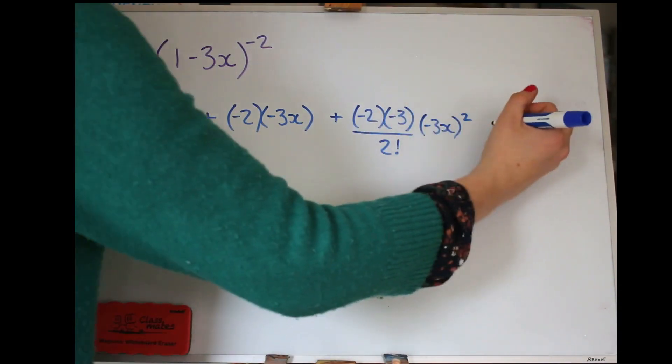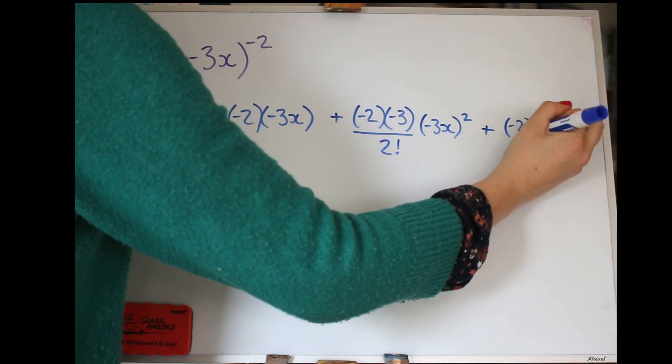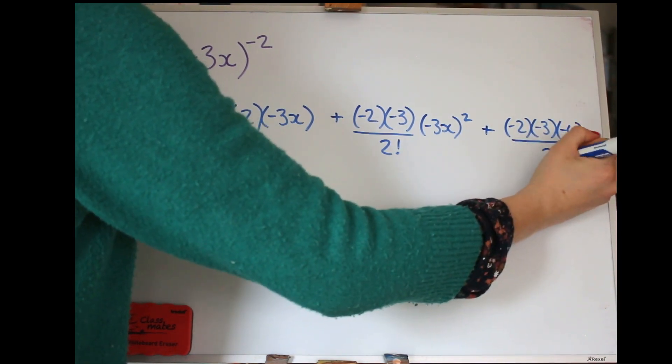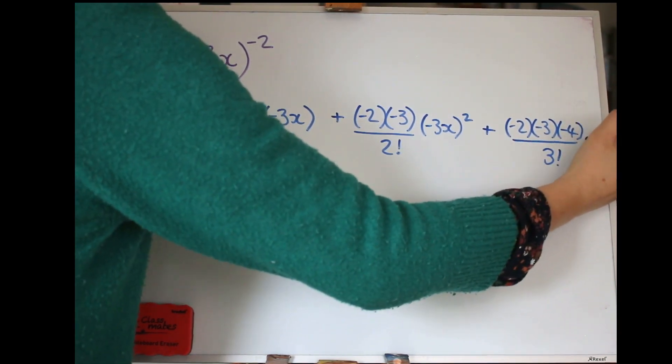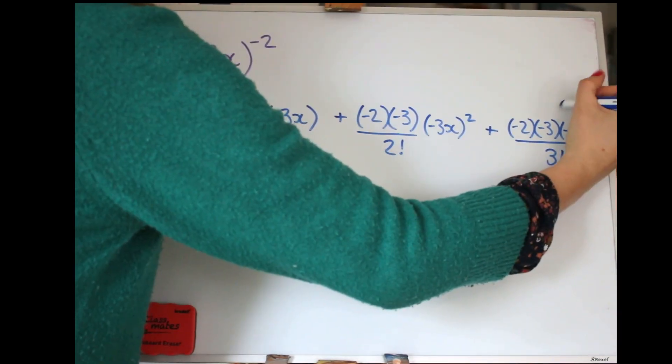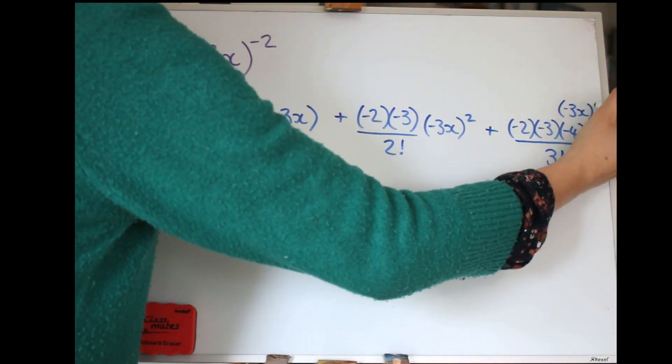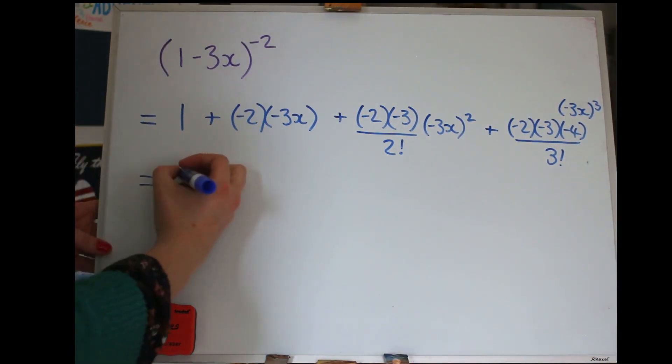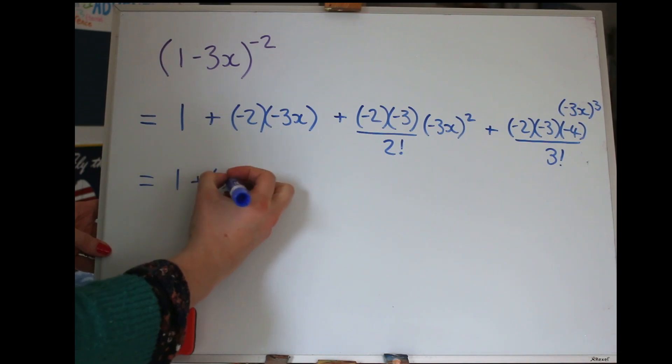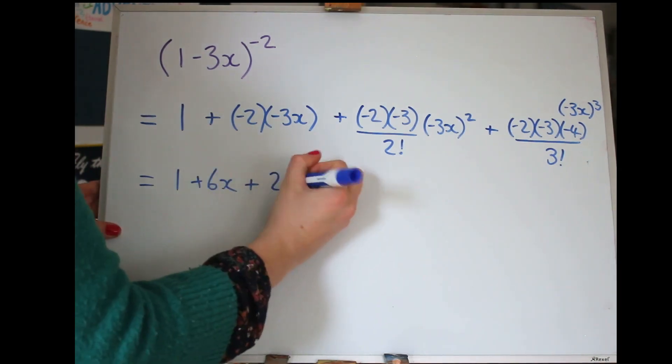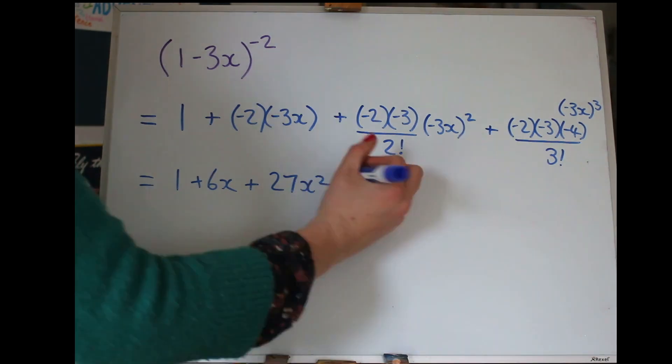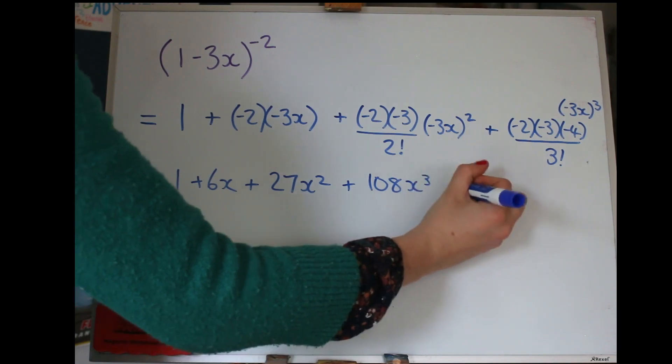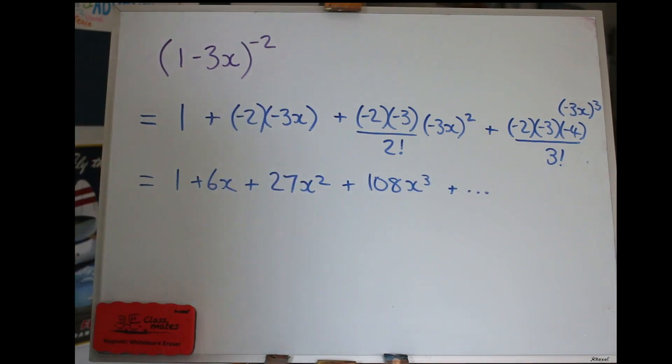And if I can squeeze it on, we'll do one more term here. So we've got minus 2 times minus 3, and then another one minus 4, all over 3 factorial, and then minus 3, and I'll just put it here, minus 3X will be cubed now. Let's just practice simplifying that. So 1 plus 6X, I make that 27X squared, and then 108X cubed, and I really should put a plus dot dot dot, because there's way more.